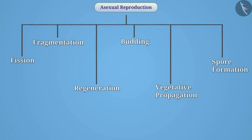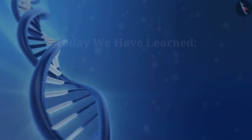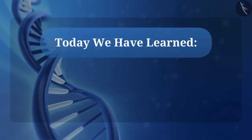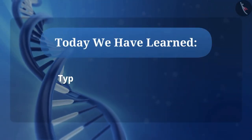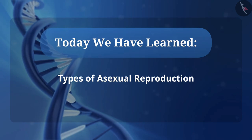Now you must have understood the various methods of asexual reproduction. Today we have learnt the types of asexual reproduction.